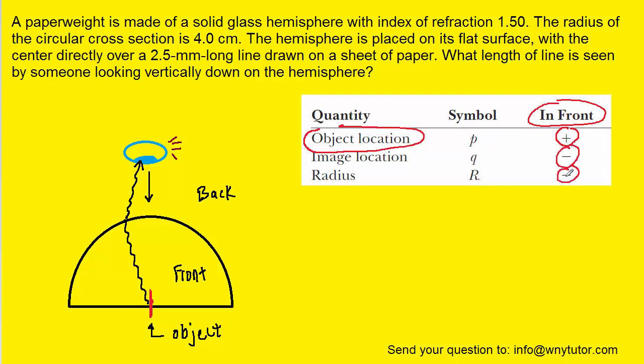So in fact, maybe we could start with the radius, which is given to us as 4 centimeters. But we can see from the conventions here that we're actually going to call that negative 4 centimeters because the object is located on the front side of the surface.